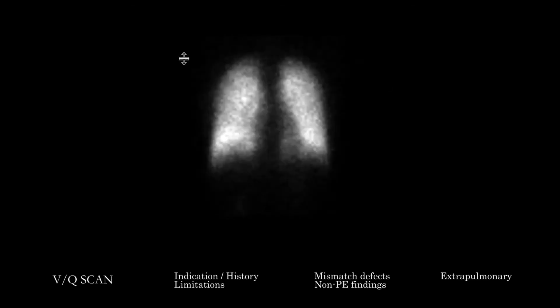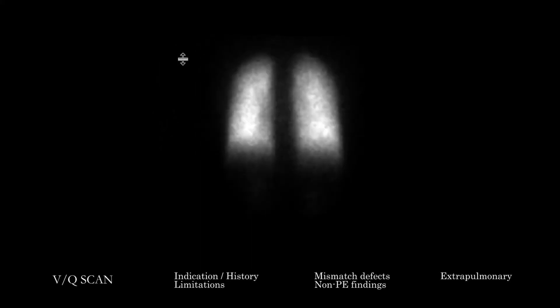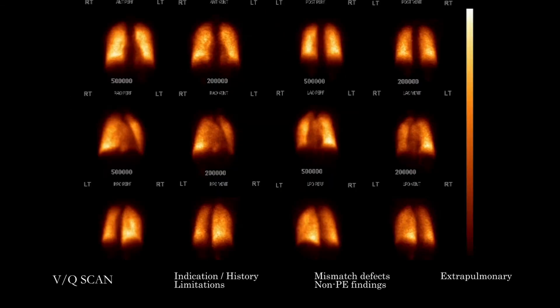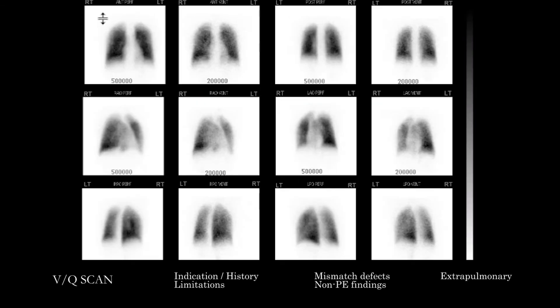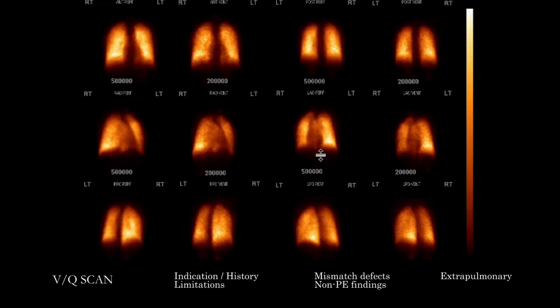This is what a VQ study looks like. You may be provided a couple of raw images of various anterior and oblique views — both ventilation and perfusion images — and then they will be summed up in summary images. We have here perfusion images and ventilation images in different projections: anterior, right anterior oblique, right posterior oblique, posterior, left anterior oblique, and left posterior oblique.